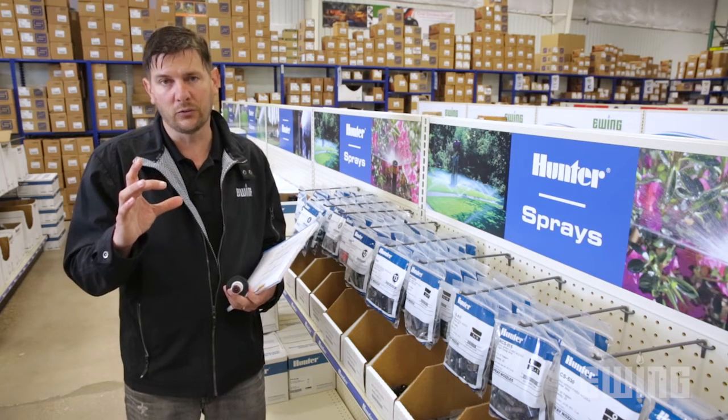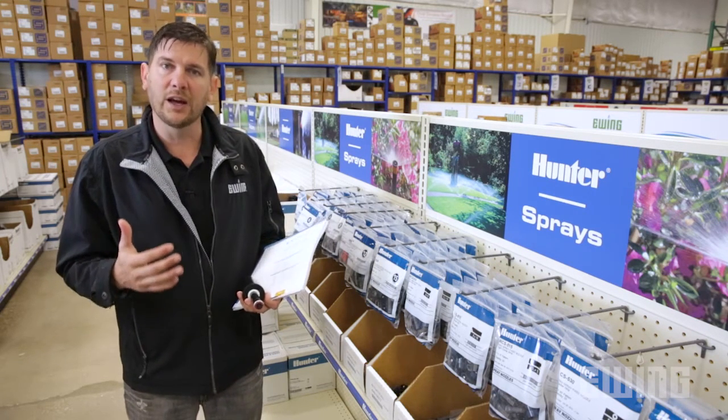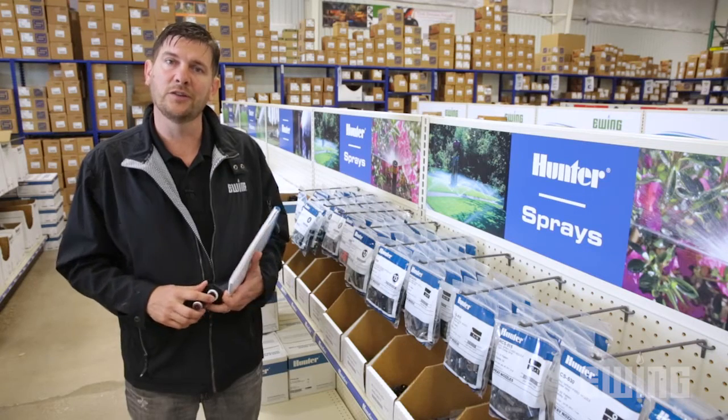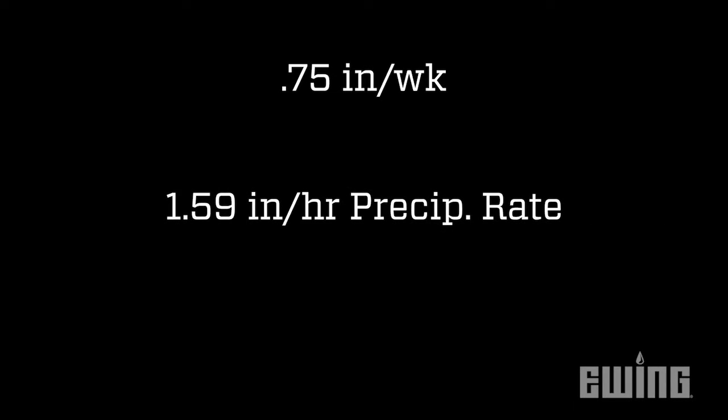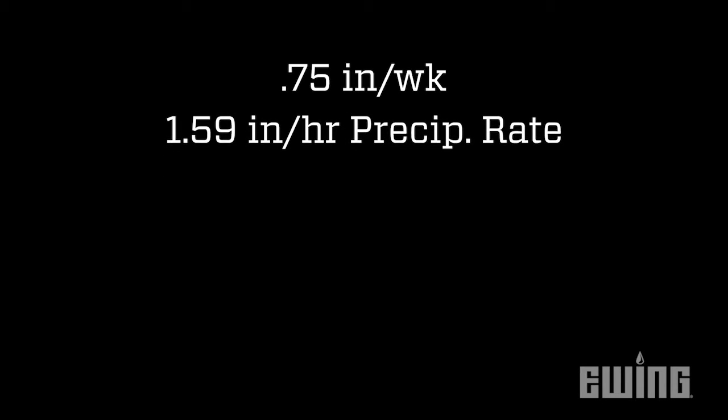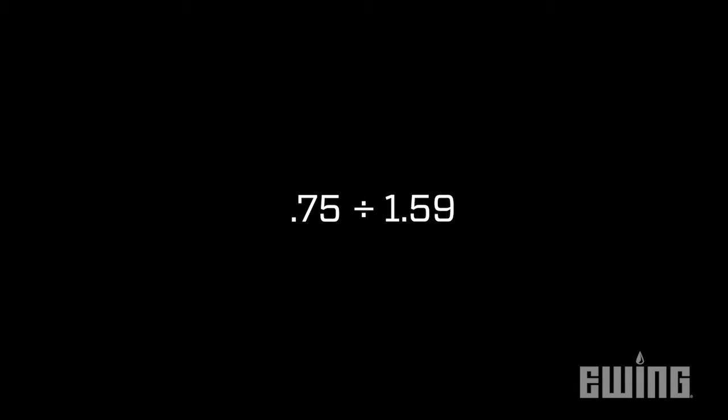Now that we have the irrigation water requirement and the precipitation rate, we can put this into a formula to calculate run times. Let's assume we have turf grass that requires 0.75 inches for the week, being irrigated by a sprinkler head putting down water at 1.59 inches per hour. Take 0.75 inches, divide it by 1.59 inches per hour, then multiply by 60 to convert to minutes — that gives us 28 minutes for the week. If we're going to irrigate over three days, that's roughly 9 minutes per day for that zone.